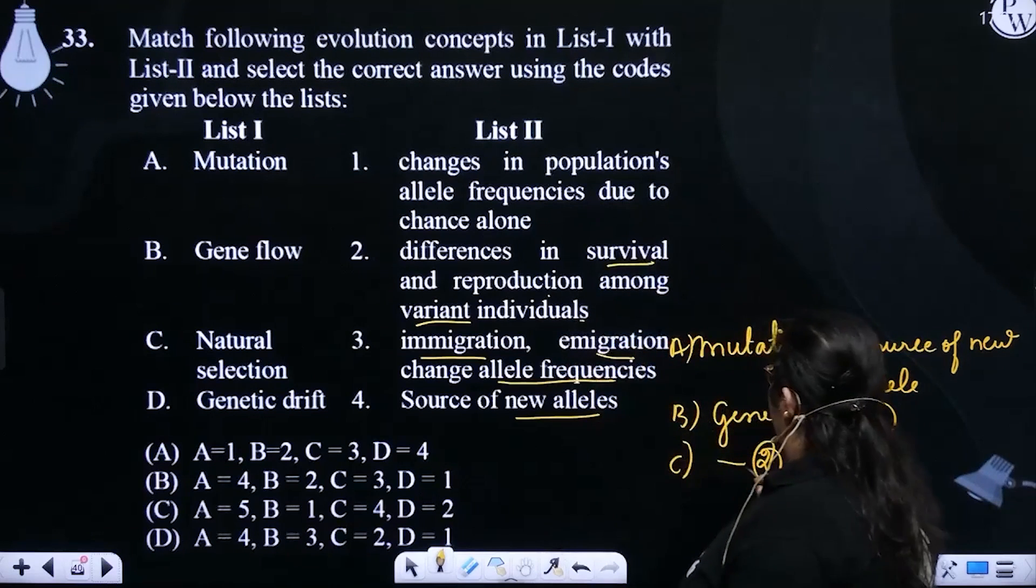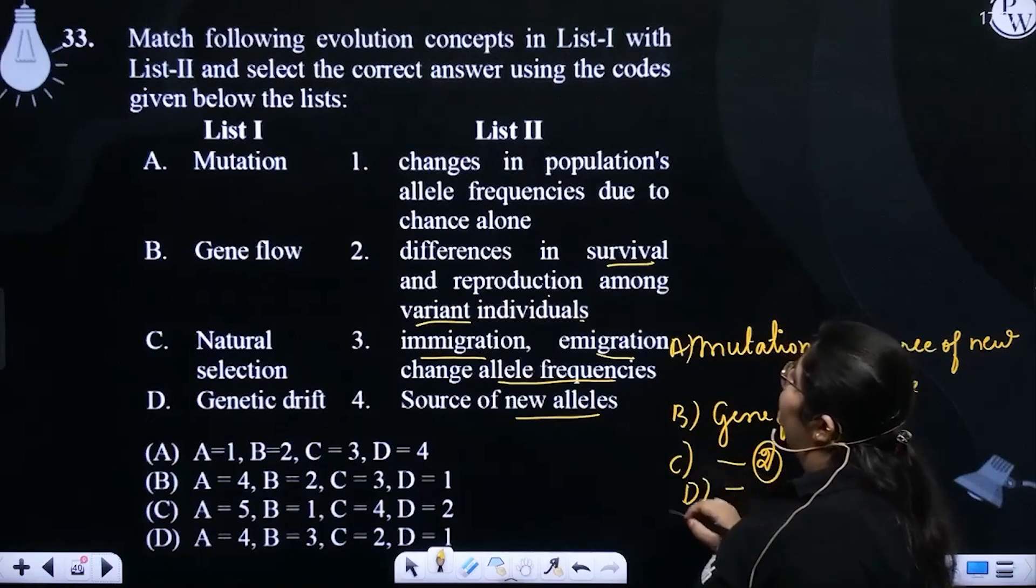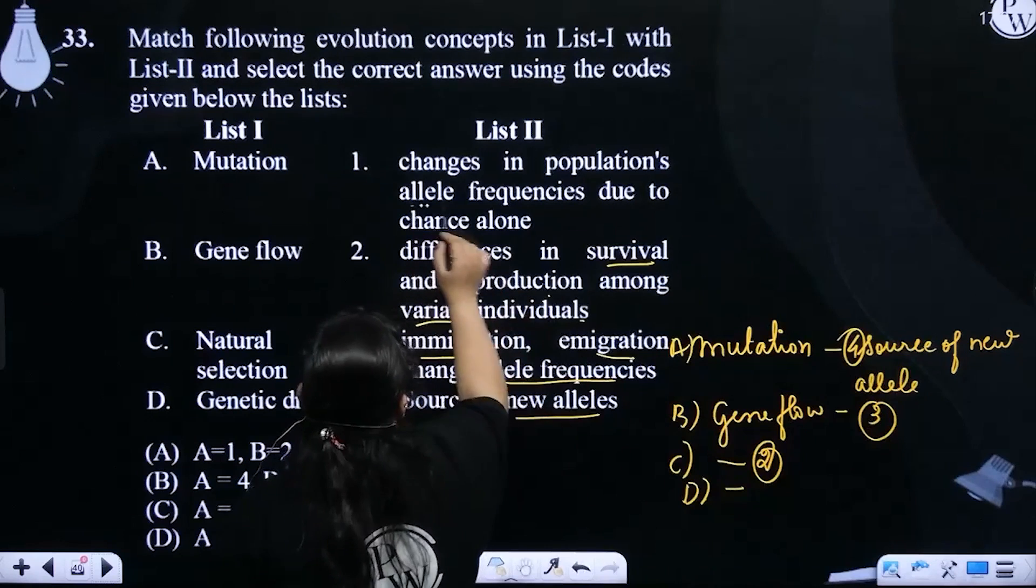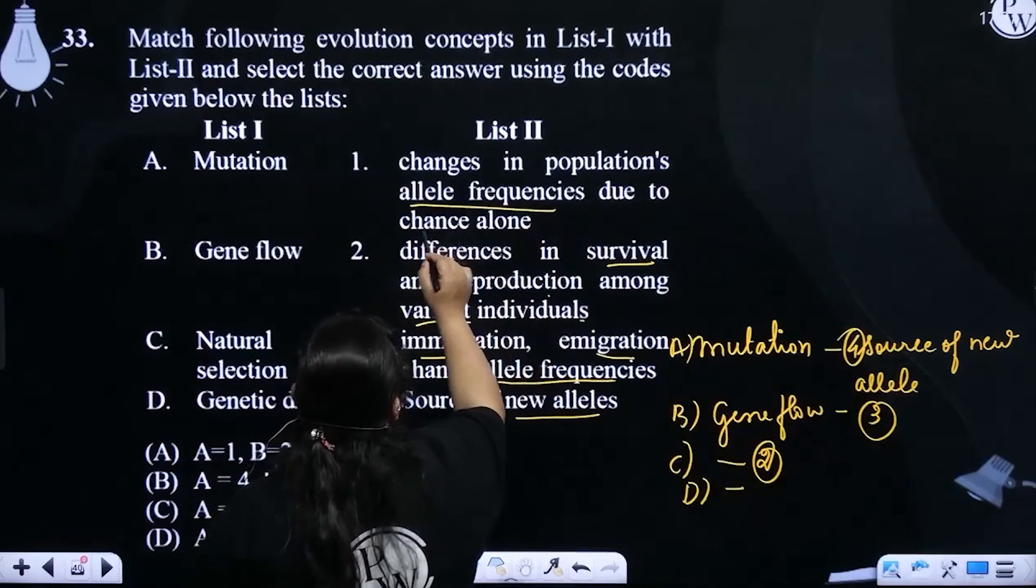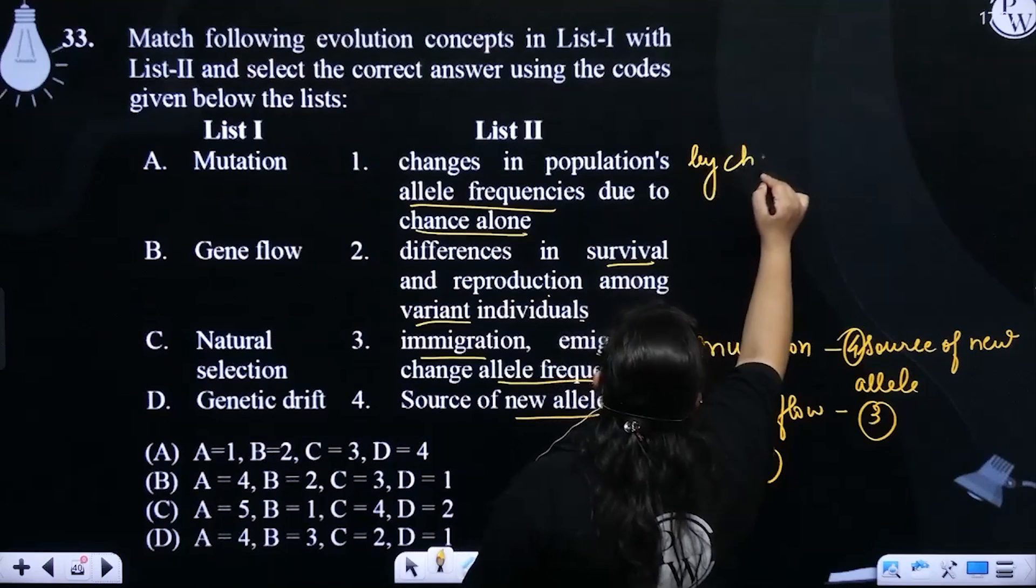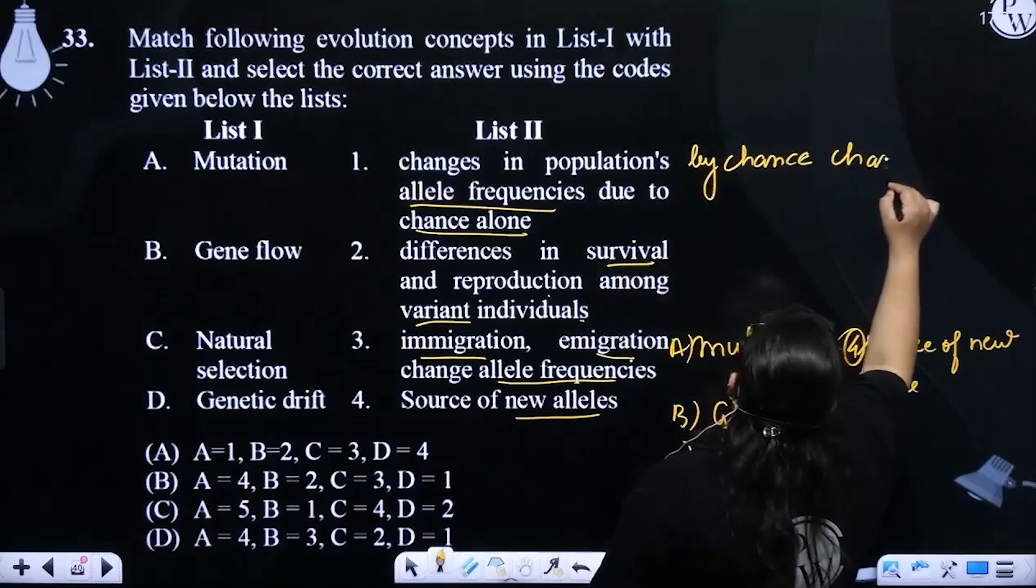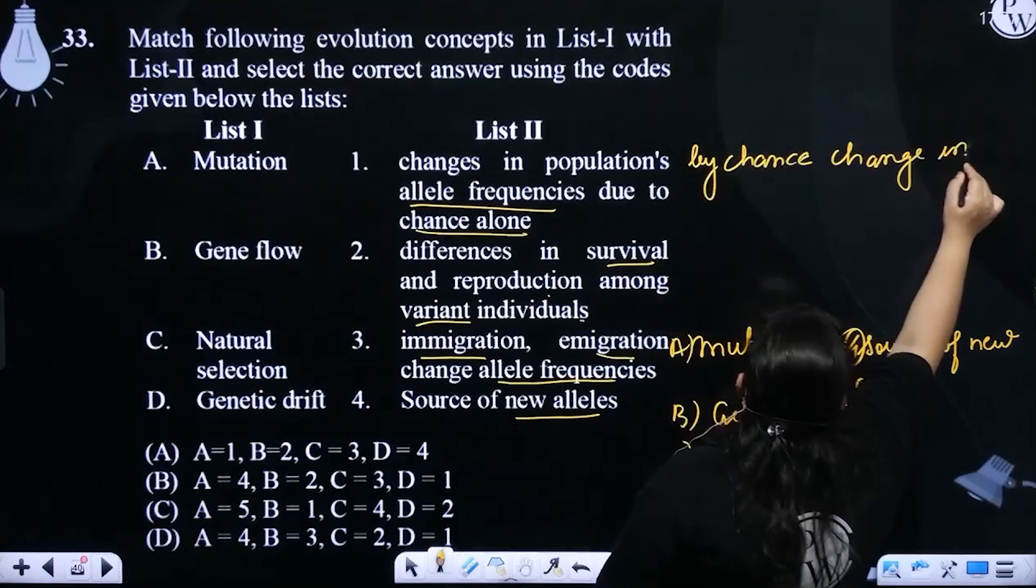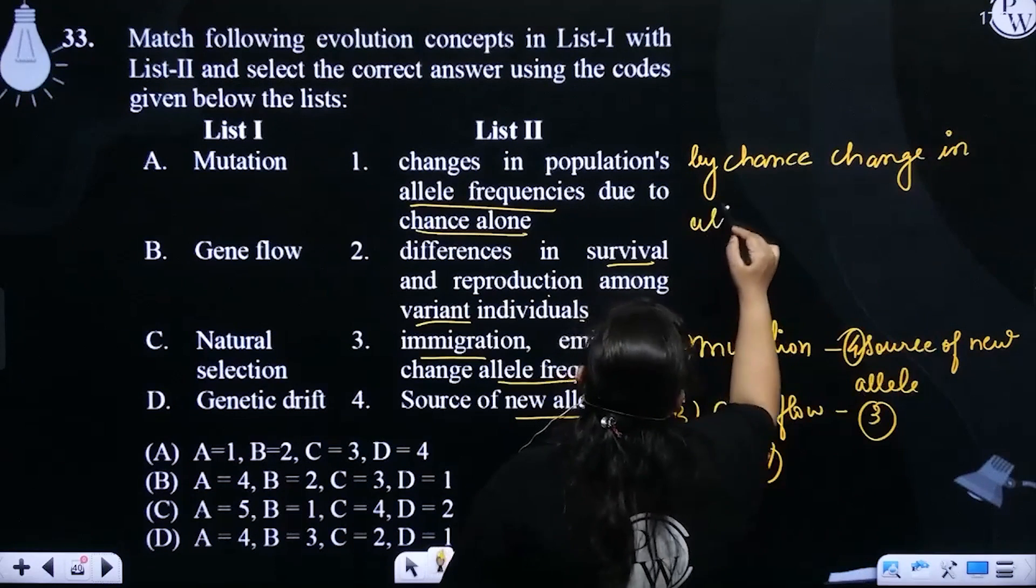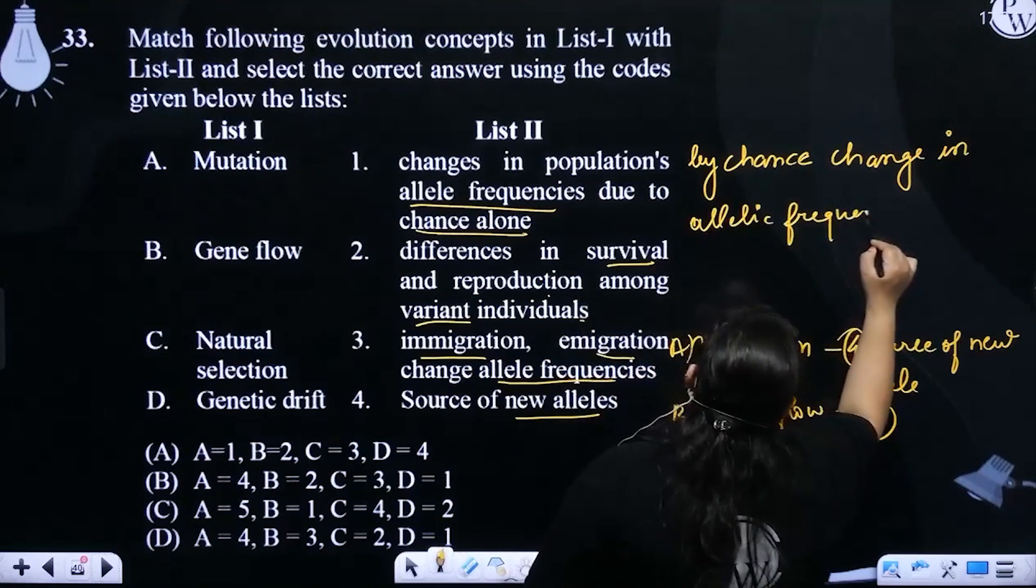Genetic drift is the random change in a population's allele frequency due to chance—we can write it as change in allelic frequency by chance.